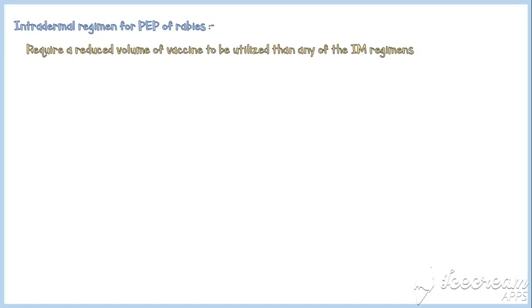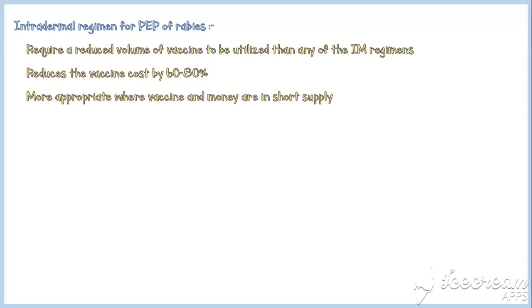In addition to the intramuscular regimens, intradermal preparations are also available for post-exposure prophylaxis of rabies. These regimens require a reduced volume of vaccine compared to any of the intramuscular regimens, reducing the vaccine cost by 60 to 80%. These preparations are more appropriate where vaccine and money are in short supply, such as in rural hospitals.